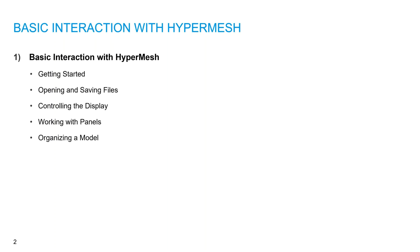First of all, basic interaction with HyperMesh. HyperMesh software — how do we start? HyperMesh File, Open, File, Save, Export, Options, etc. Next, Display Control, Geometry Control and Mesh Control. How do we do it? How do we organize the model?